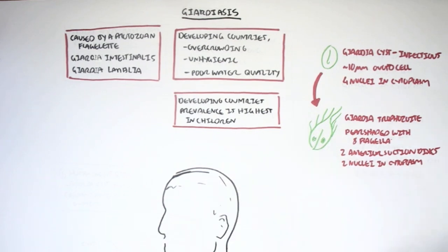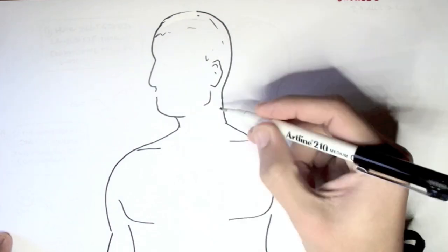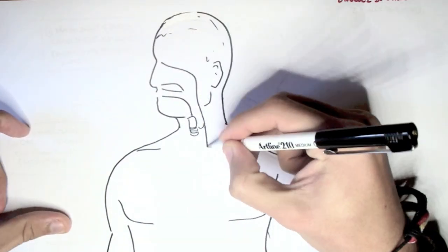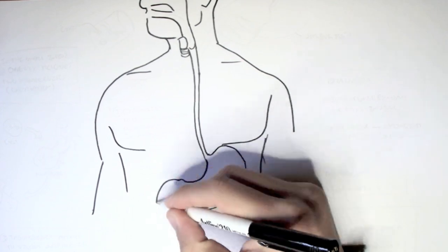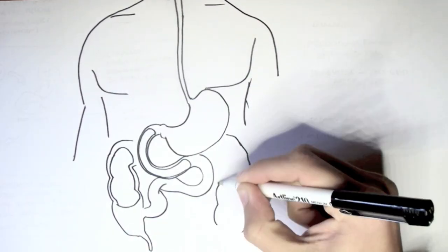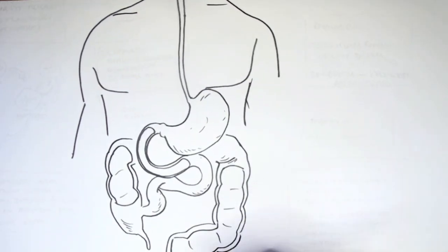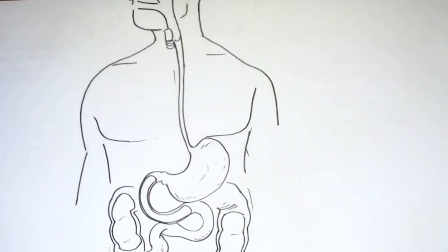Now let's see how this protozoan flagellate causes an infection in the human body. Here I am drawing a human with the gastrointestinal tract, the mouth, the esophagus, stomach, small intestine, and the large intestine. I am drawing the gastrointestinal tract because this is how the protozoan flagellate causes an infection in humans.